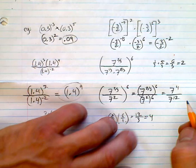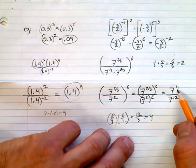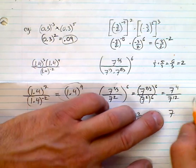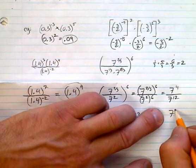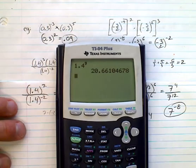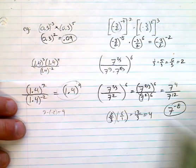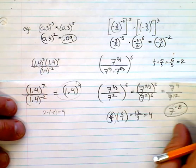Now we can subtract the exponents: 7 to the power of 4 minus 12, which is negative 8. You can leave it as 7 to the power of negative 8 - it's a super small number, but I'm happy if you get to this point.